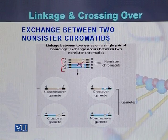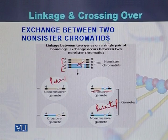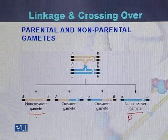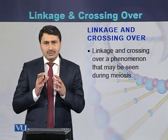Due to chiasmata formation, the blue part has been attached with the yellow or brown part of the chromosome. Two of the gametes are parental — exactly like the chromosome of the parent. While the other two are different from the parents because they have exchanged their fragments as a result of crossover. So two gametes are parental type and two are non-parental type. Linkage and crossover are phenomena that take place during meiosis.